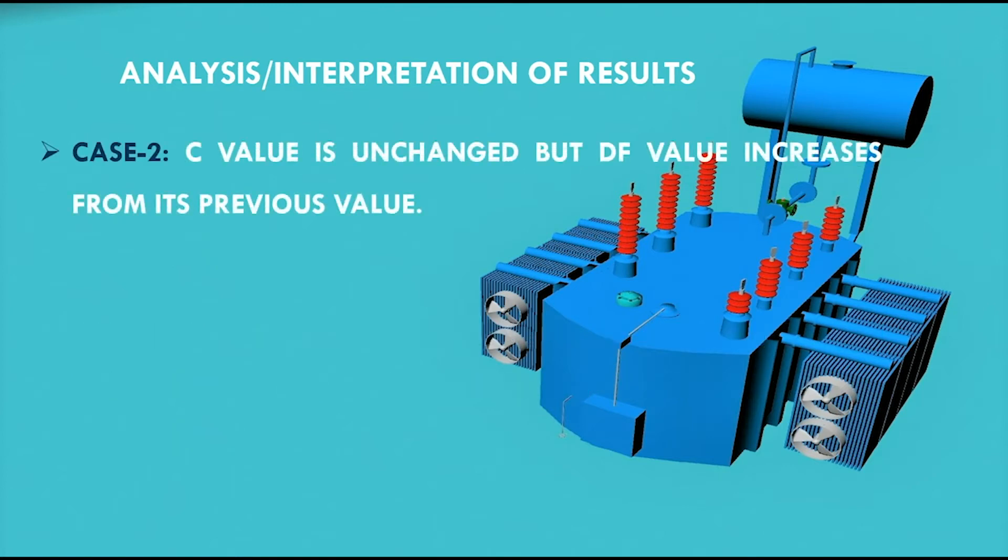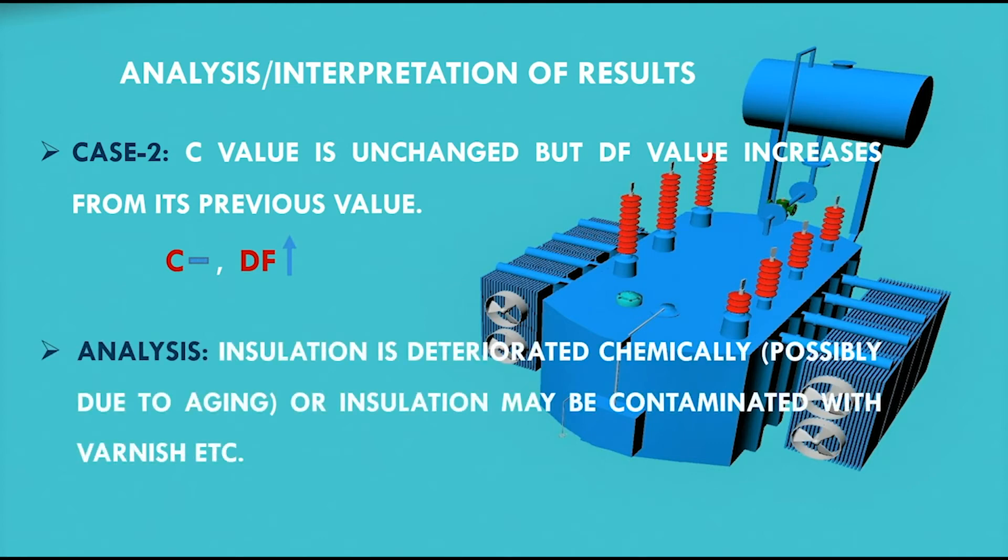In second case, if C value is unchanged but DF value increases from its previous value then it means that insulation is deteriorated chemically, possibly due to aging or insulation may be contaminated with varnish. But there is no moisture present.